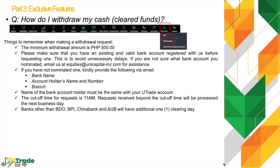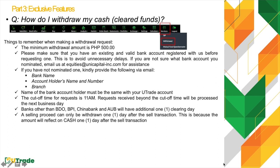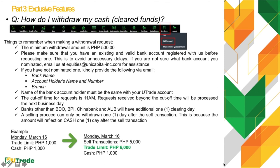Ensure you have a valid bank account registered with us before requesting a withdrawal. The name of the bank account holder must match your UTrade account. The cutoff time for requests is 11:00 AM — requests received beyond that time will be processed the next business day. Banks other than BDO, BPI, or China Bank will have an additional one clearing day. Important: a selling proceed can only be withdrawn one day after the sell transaction, as the amount reflects on cash balance one day after the transaction date.